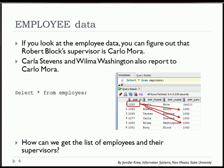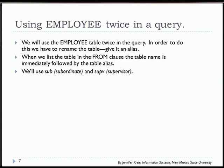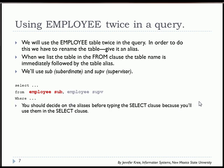We're going to look at how to list employees and their supervisors. We'll need to use the employee table twice in the query to get data for both the employee and the supervisor. We list the table twice in the FROM clause and assign temporary aliases — SUB for the employee as subordinate, and SUPV for the supervisor copy of the employee table. It's a good idea to decide what aliases you'll use in the FROM clause before writing the SELECT clause.